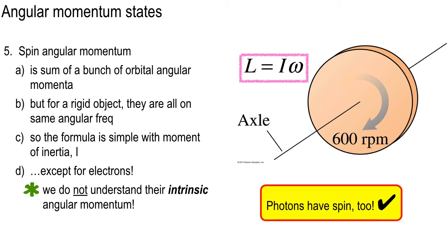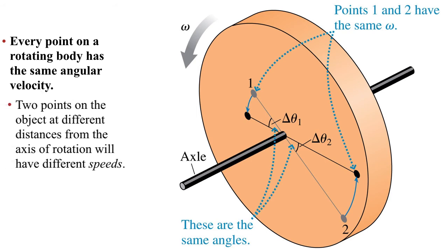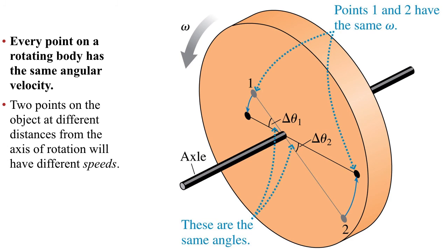Photons of light also have intrinsic angular momentum — riddle me that one. That's a profound mystery; photons are the most mysterious of all. Every point on a rotating body has the same angular velocity. Two points at different distances from the axis rotate with different speeds — the miles-per-hour rating for something near the center is smaller than for something out at the edge.